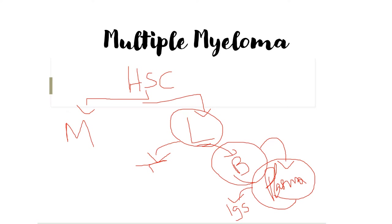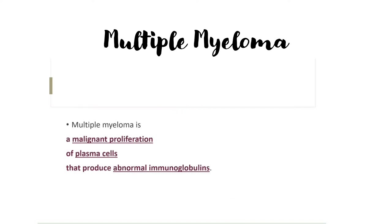Normally, the plasma cells produce normal immunoglobulins that can effectively fight off the foreign body. Whereas in multiple myeloma, the plasma cells produce abnormal immunoglobulins that do not effectively fight off the antigens. Additionally, there is a malignant proliferation of the plasma cells — that is, an increase in the number of plasma cells — and these plasma cells in turn produce abnormal immunoglobulins. So in simple terms, multiple myeloma is a cancer of plasma cells that produce abnormal immunoglobulins.